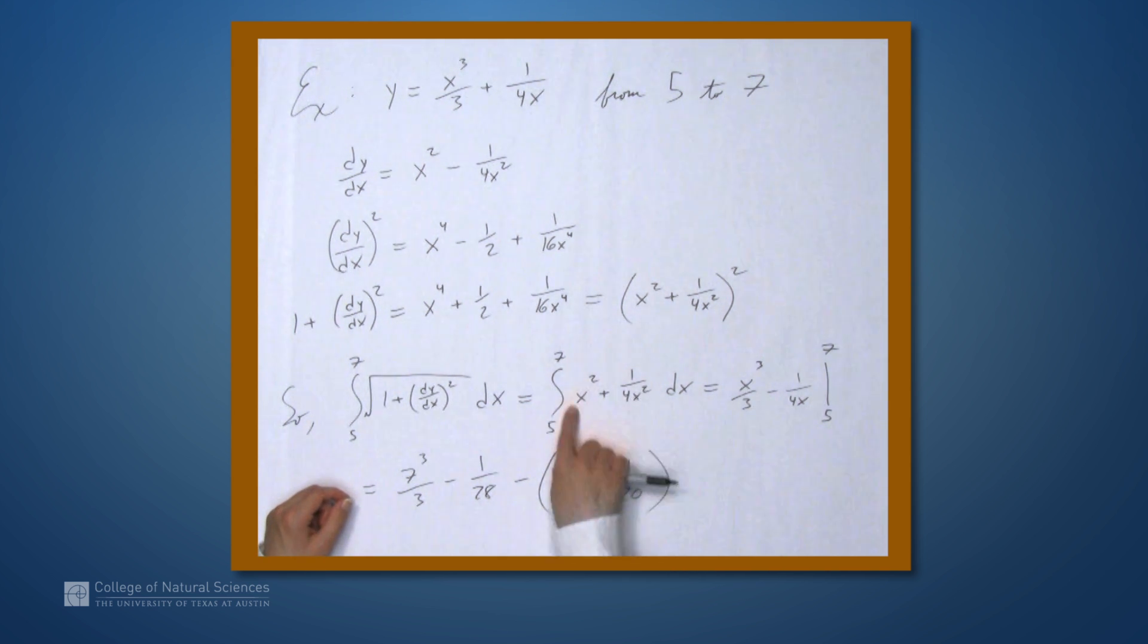This expression is pretty easy to anti-differentiate. It's very, very easy to get something inside this square root that you can't deal with with nice techniques. But, in this case, we do get something nice, and here's the arc length of our function.